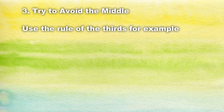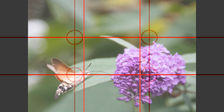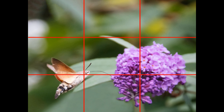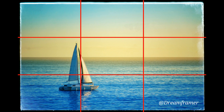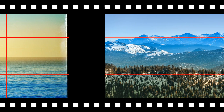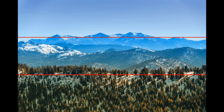Number three: try to avoid the middle. Use the rule of thirds, for example. The rule of thirds suggests that the picture will look nicer if we divide the frame with two vertical and two horizontal lines into a three-by-three grid, and then place points of interest at those lines or their intersections. As an example, I prepared three photos. The moth is positioned where two of these lines are crossing. The boat is at one of the vertical lines, also at an intersection. And the landscape picture shows how the mountain ridges follow the two horizontal lines that divide the picture into three parts.